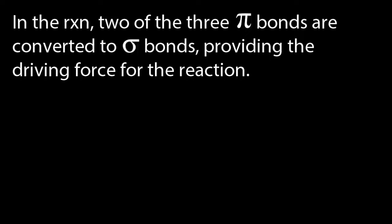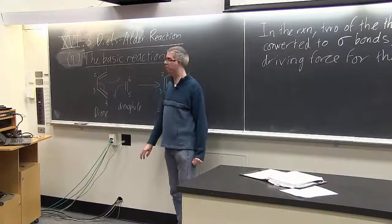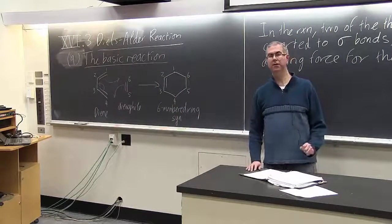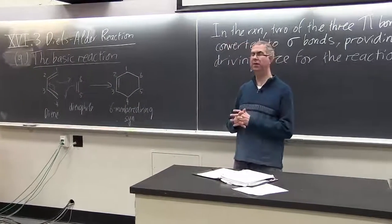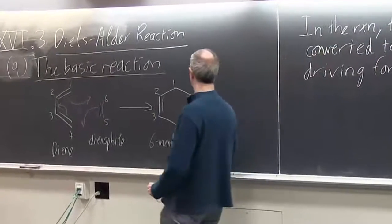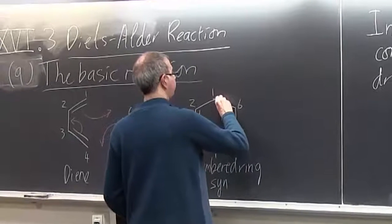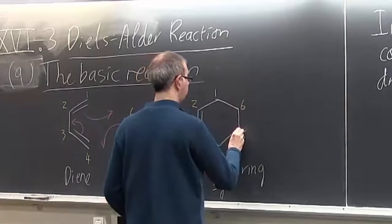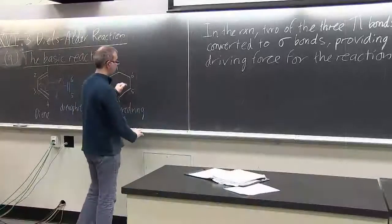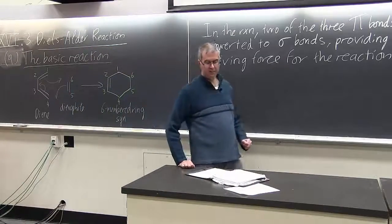We took our three pi bonds in the original starting materials and we ended up with just one. And those electrons from the extra two pi bonds ended up in these two new sigma bonds.